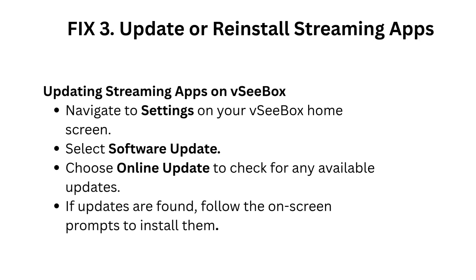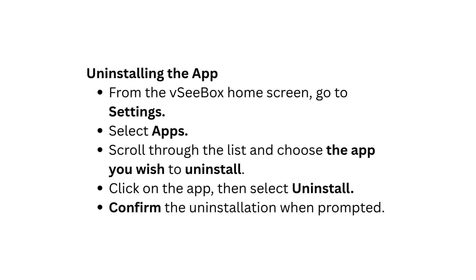Fix 3: Update or reinstall streaming apps. To update, navigate to Settings on your VC Box home screen, select Software Update, and choose Online Update to check for available updates. If updates are found, follow the on-screen prompts to install them. To uninstall an app, go to Settings, select Apps, scroll through the list, choose the app you wish to uninstall, click on it, select Uninstall, and confirm when prompted.